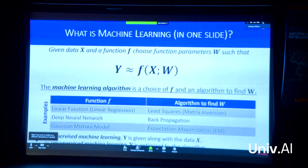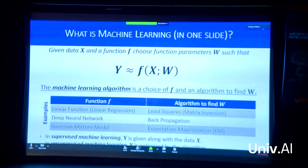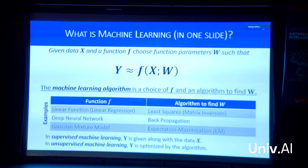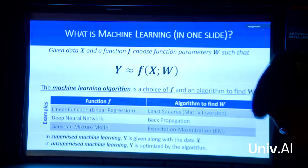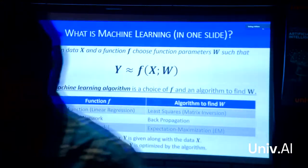Finally, you have supervised and unsupervised learning. If you don't understand this stuff, that's okay. All you really need to know is that machine learning is about finding parameters such that Y equals F of X holds.